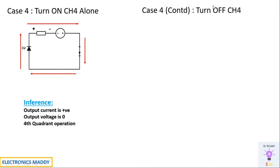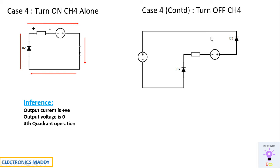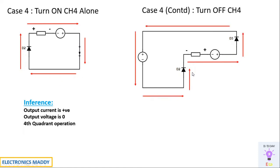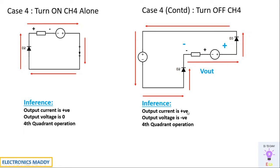Now if CH4 is also turned off, freewheeling action takes place. The inductor that was previously charged reverses its polarity, ensuring current still flows in the same direction. Minus is connected to the cathode of D2, so D2 is forward biased. Plus is connected to the anode of D3, so D3 is also forward biased. Current flows through the freewheeling path. The output voltage is negative — that is minus and plus with respect to the RLE load — and the current is still flowing in the positive direction according to our convention. Output current is positive, output voltage is negative, and this ensures fourth quadrant operation.